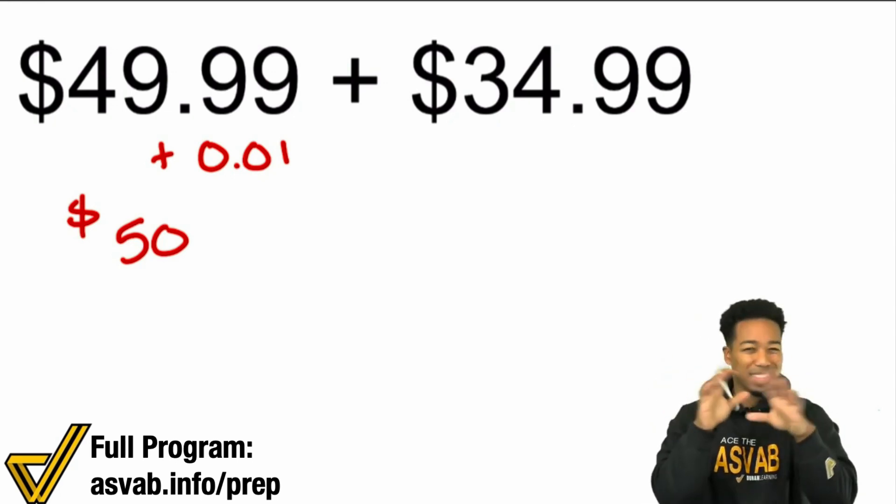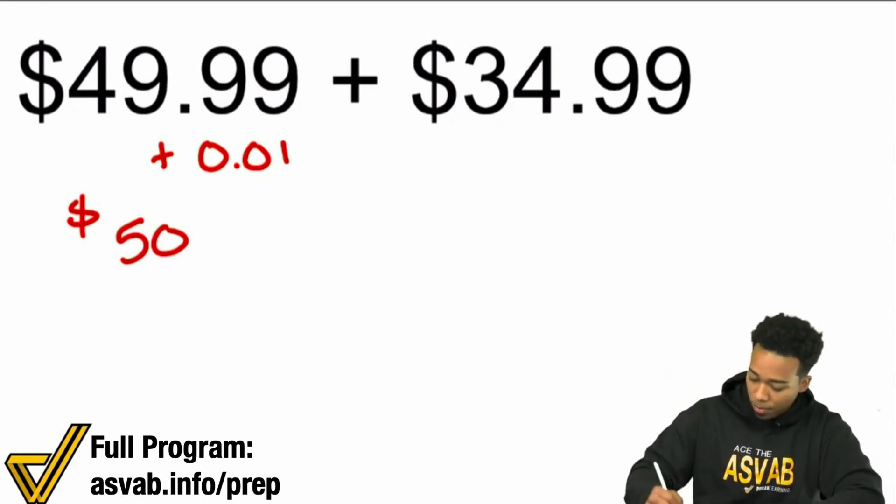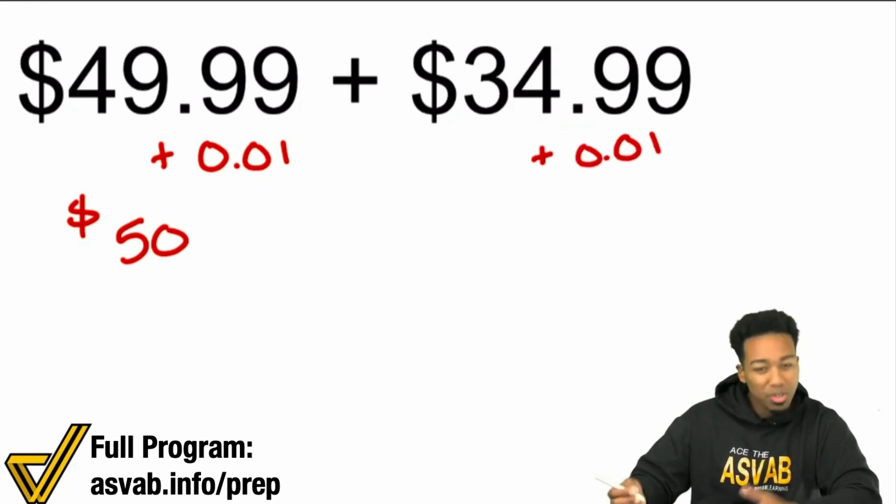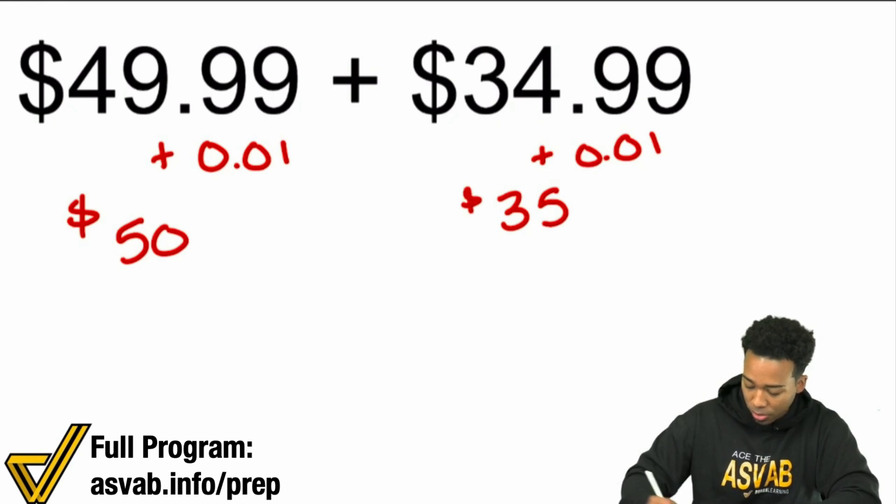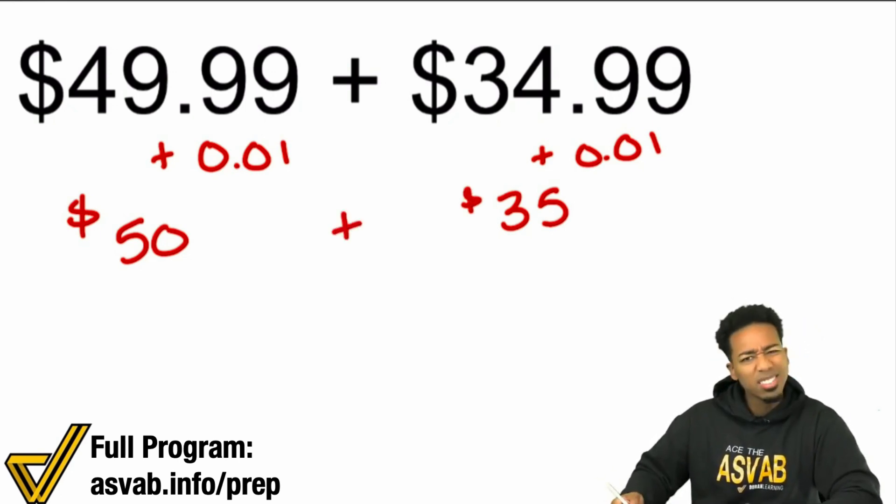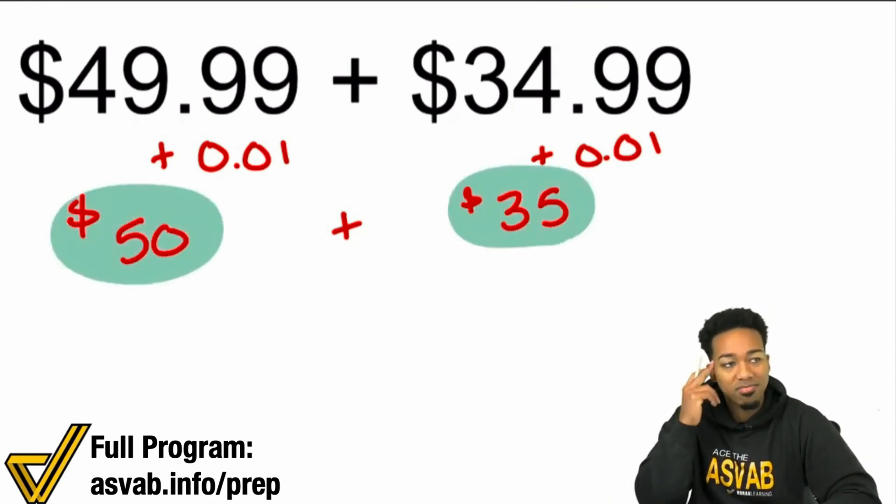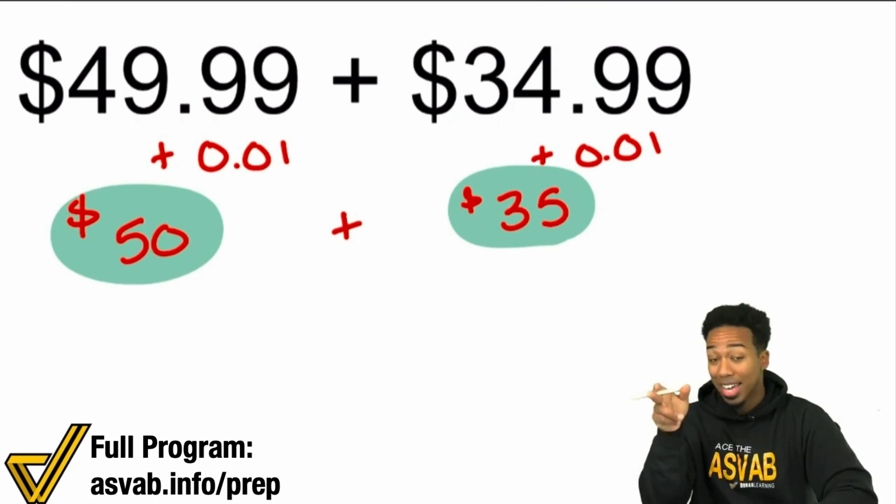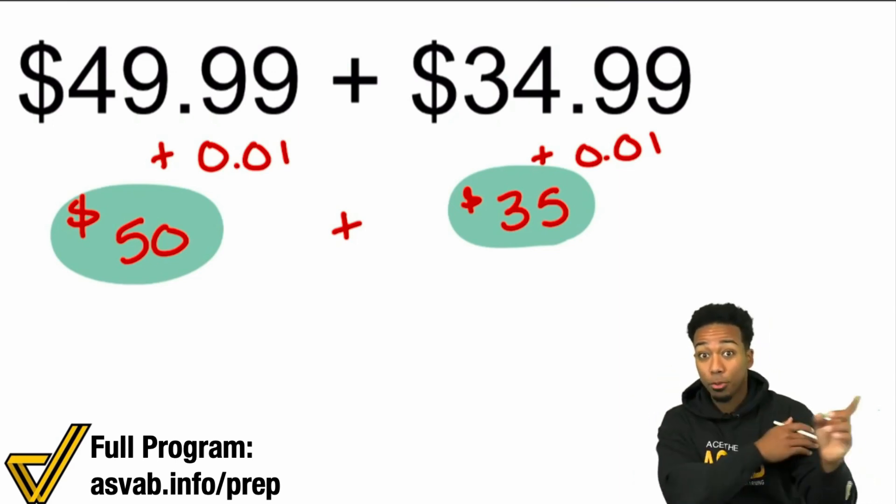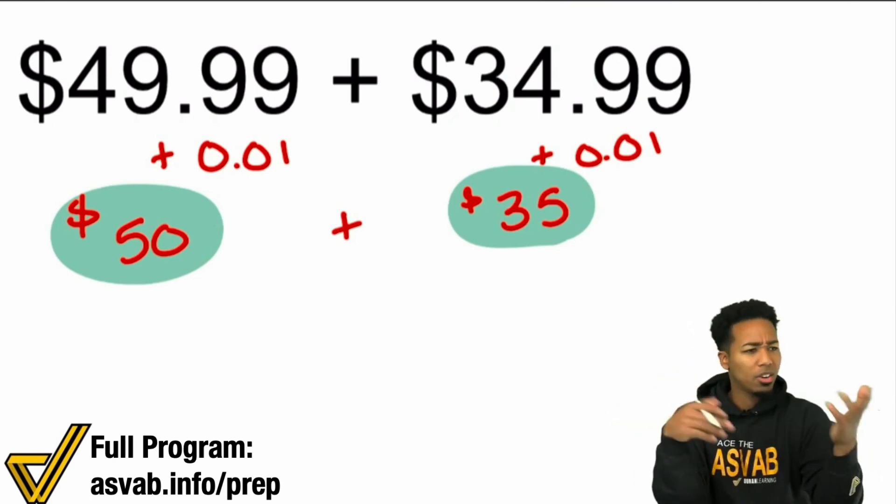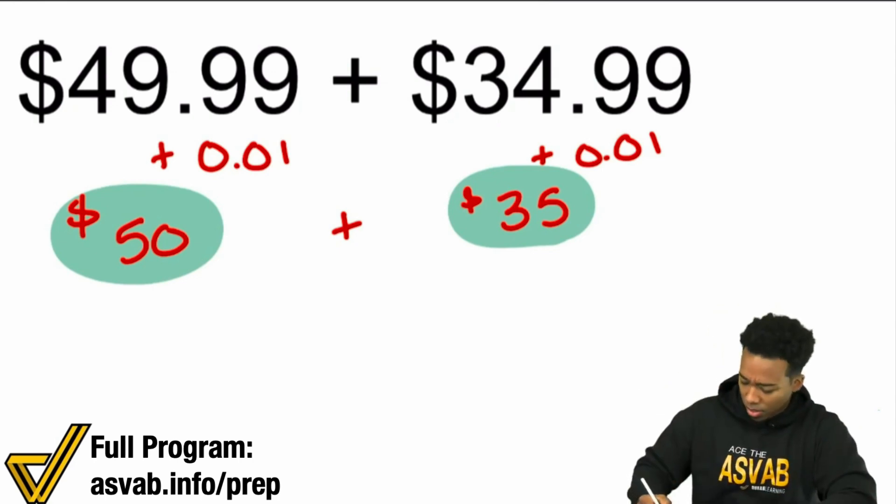So I'm saying $49.99? Nah, $50. I'm looking over here, $34.99? Nah, let me just add another penny. Let me just add another penny and make that $35. So now that I have to add these two together, isn't that easy now? What's 50 bucks plus 35 bucks? Well, that's $85. So in my head, I turned $49.99, $34.99, $50, $35. That's $85. Great.